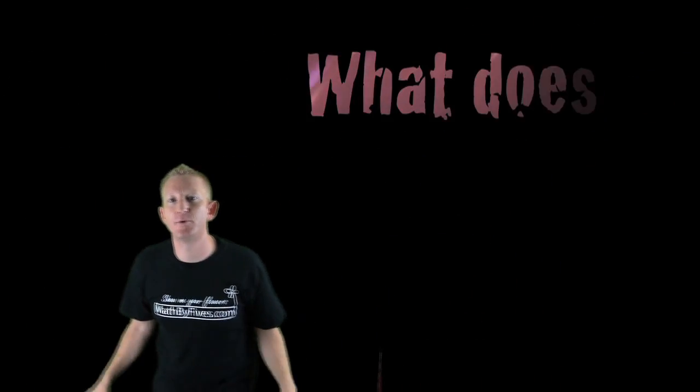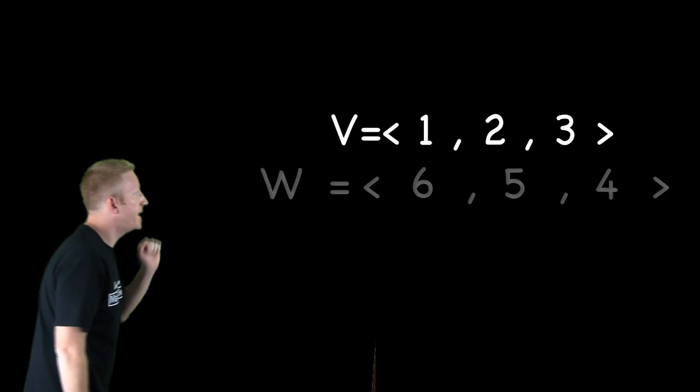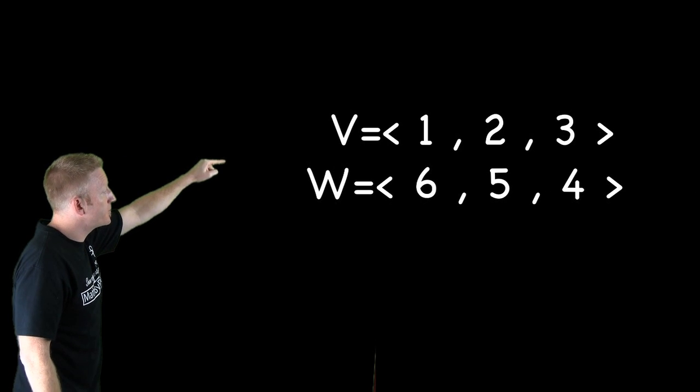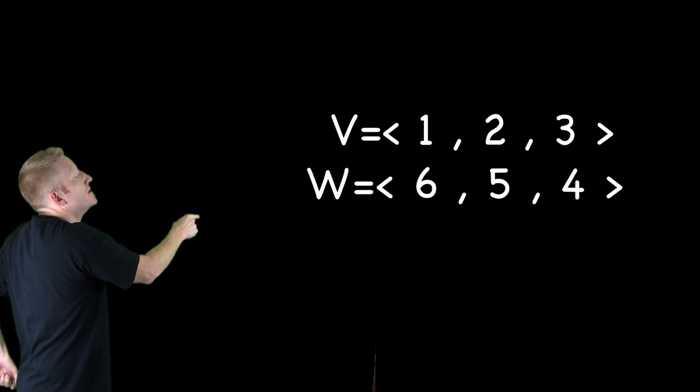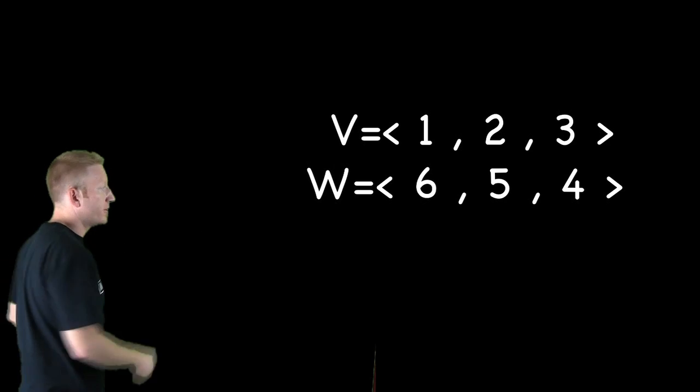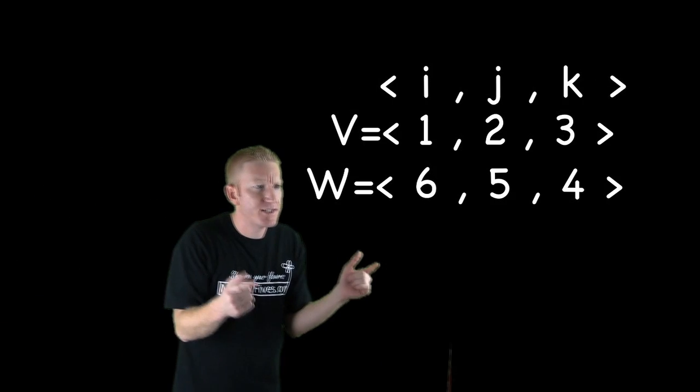Okay. How about we see an example with actual numbers? We have two more vectors. We have v and w this time. v's weighing in at one, two, three and w's weighing in at six, five, four.